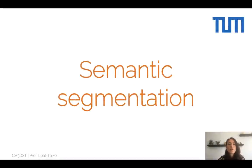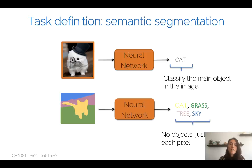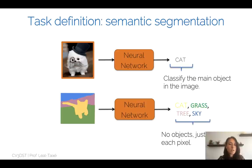Hello and welcome to the lecture on semantic segmentation. Today we move from bounding box representations to pixel-wise representations. We have been working with neural networks that take an image and give as output a classification of the main object in the image. For example, we have an image of a cat, we pass it through a neural network trained to identify objects, and it gives us back the label 'cat'.